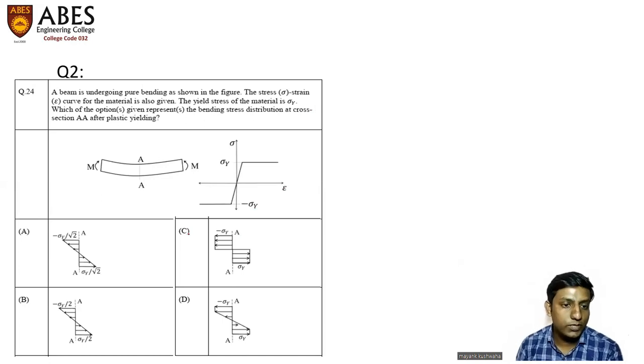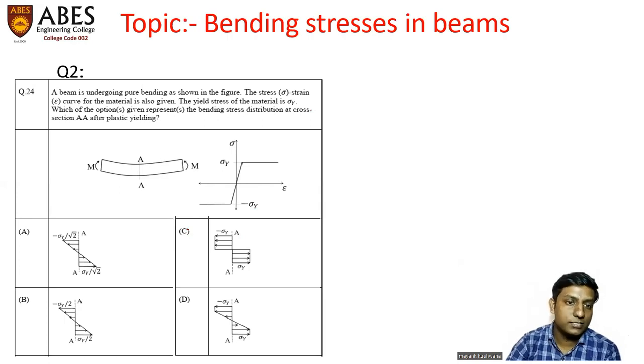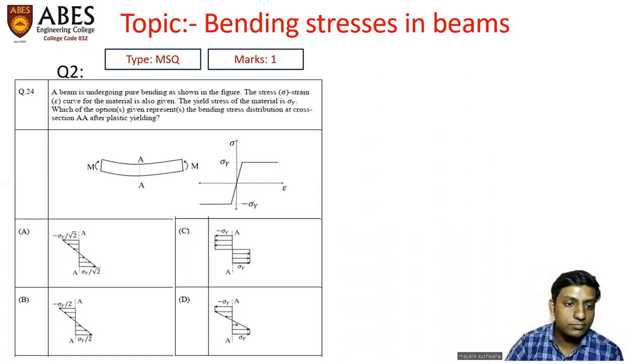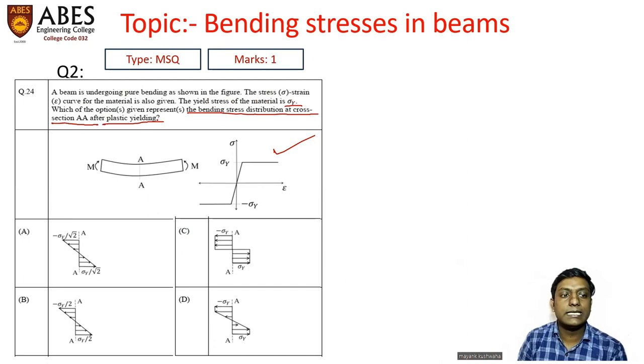The next question is this one. Again it seems to be from the topic bending stresses in beams. The type is MSQ, it is a multi-select question. That means there is a high probability that more than one option would be correct here. And again it was asked for one mark only. The question says that a beam undergoes pure bending as shown in this figure. The stress strain curve for material is also given. The yield stress of the material is sigma y. Which of the options represents the bending stress distribution at cross section AA after plastic yielding?